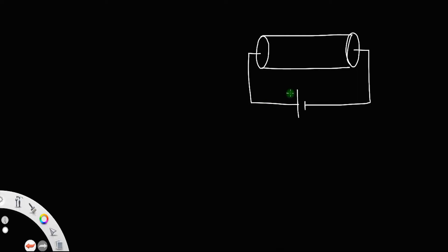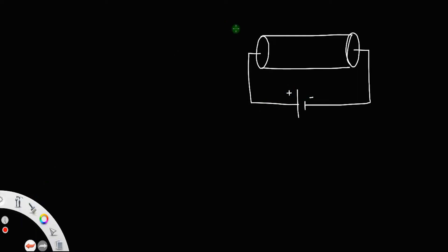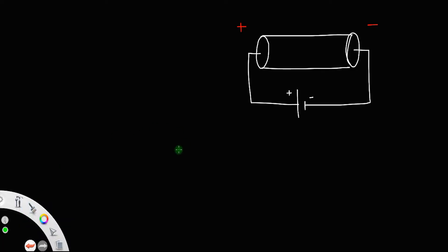Clearly, this side is positive and this side is negative. Since the electrons are of negative charge, they will move towards the positive side. So electrons will drift towards the left.